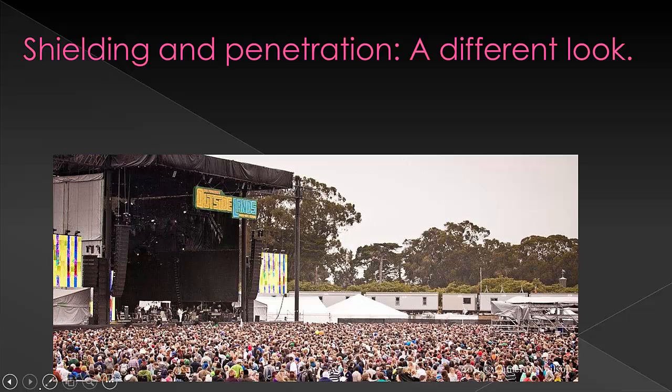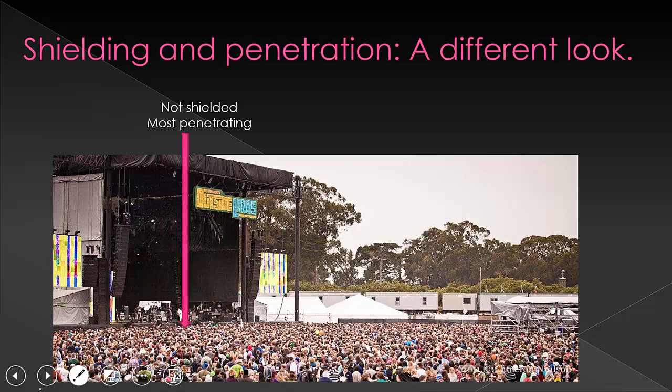Let's look at an analogy that a student and I developed together to help make this definition more memorable. Imagine you are at a concert and you're in the very first row. You have a great view of what's happening and you can see every moment — you're greatly attracted to the stage. This is like being an electron in the first energy level. Your seat, or the first energy level, is the most penetrating.